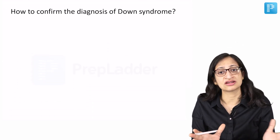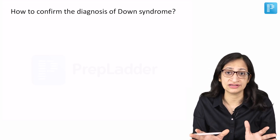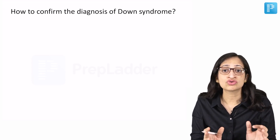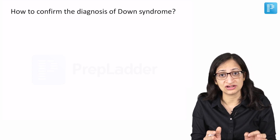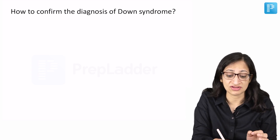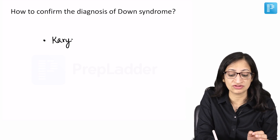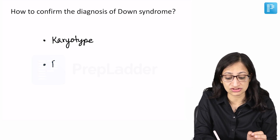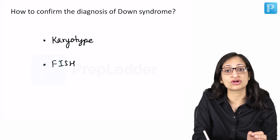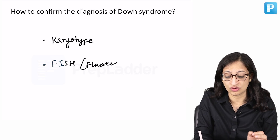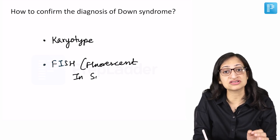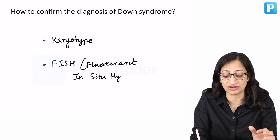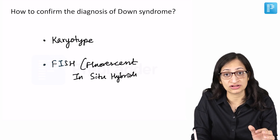Now, how to confirm the diagnosis of Down syndrome? Looking at the baby you got an idea that probably this child is suffering from Down syndrome, but how do you confirm it? For confirming the diagnosis using the blood of the individual, you can do investigations like the karyotype, where you can visualize all the chromosomes of the body, or there can be an investigation called FISH — fluorescent in-situ hybridization.